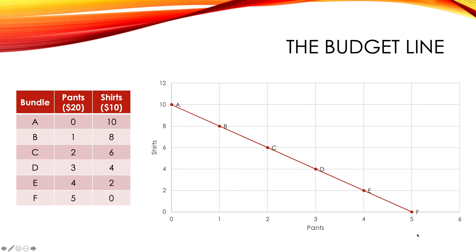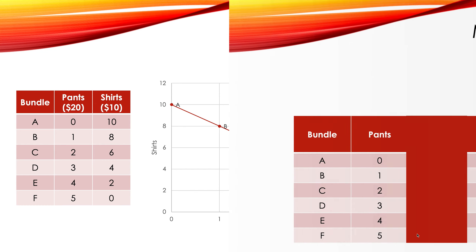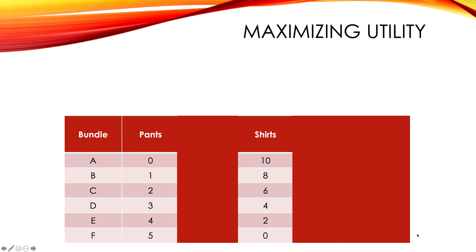But what we didn't say is: what is the best point on that line? That is, of all the efficient points A through F, what is the best point to consume at? You might have some judgments like, 'Oh, it's C or D because you're getting a little bit of both things.' But the better way to look at it is with utility. You have to have utility information in order to make a determination about which point is best, because any of those bundles are efficient. And if we're only looking at efficiency, bundle A is just as good as bundle F or C or D or any of the others.